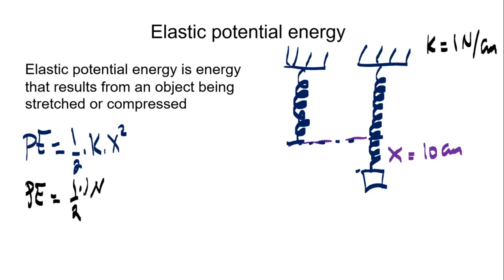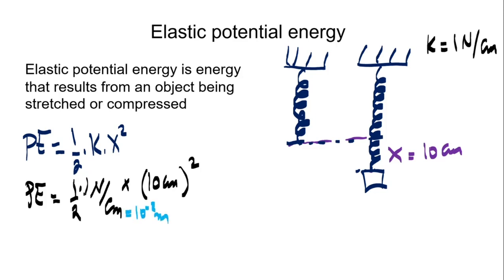So the potential energy will be one half times K, which is 1 Newton per centimeter, times X, which is 10 cm, squared. In this case we need to convert centimeters — 1 centimeter equals 10 to the negative 2 meters.